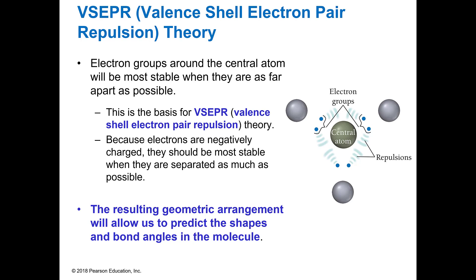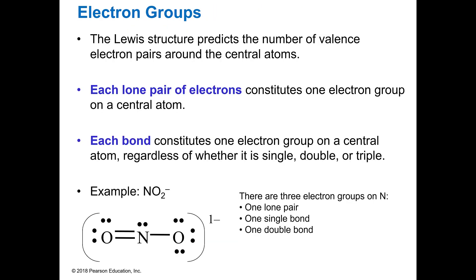So VSEPR stands for valence shell electron pair repulsion theory. See why we call it VSEPR. And so basically you have electron groups around a central atom, and you want to see where they're going to be most stable. And most stable is going to be where the electrons are as close to the central atom as they can be, but as far away from each other as they can be as well. And the resulting arrangement allows us to predict the shapes based on bond angles.